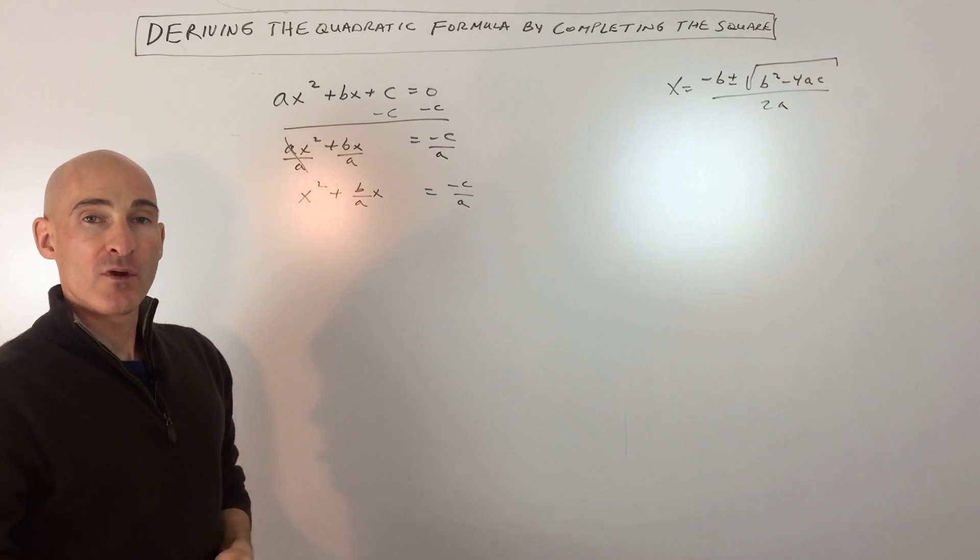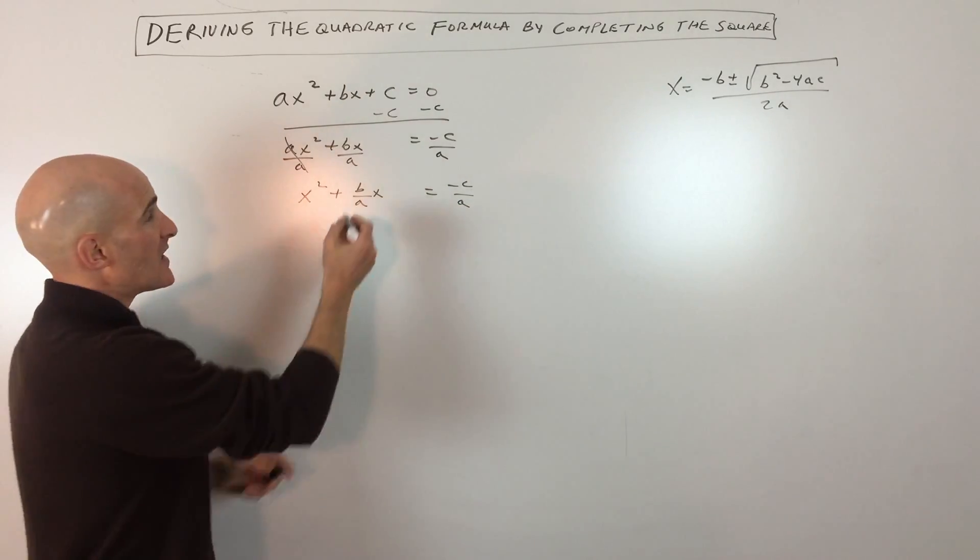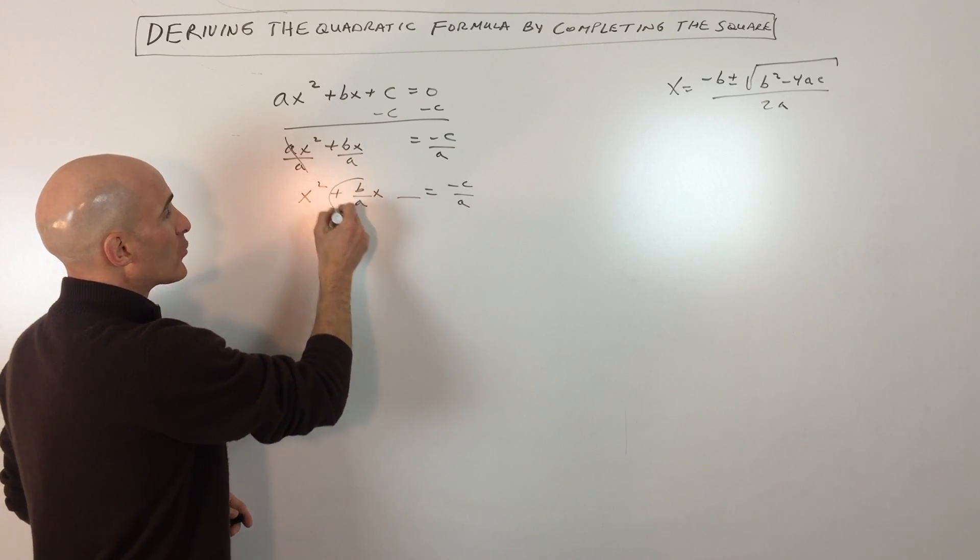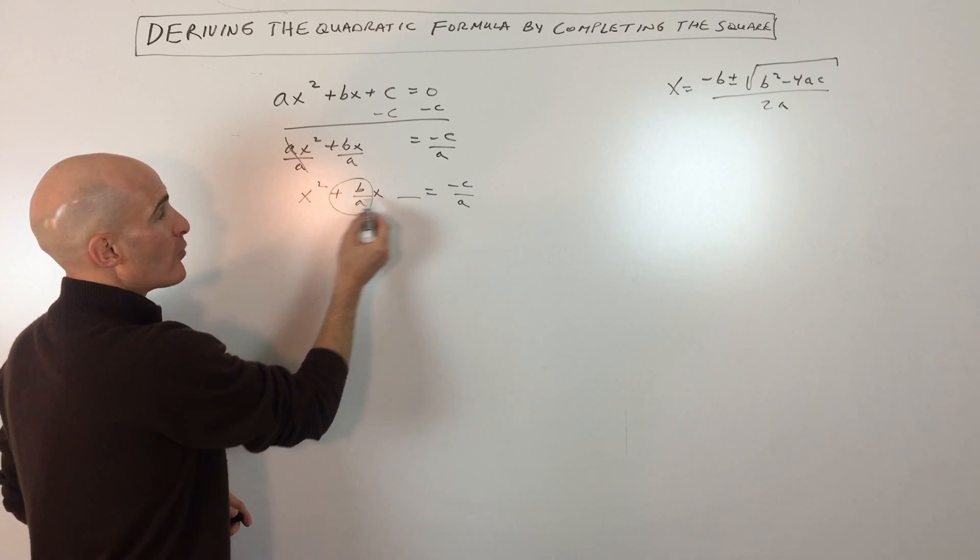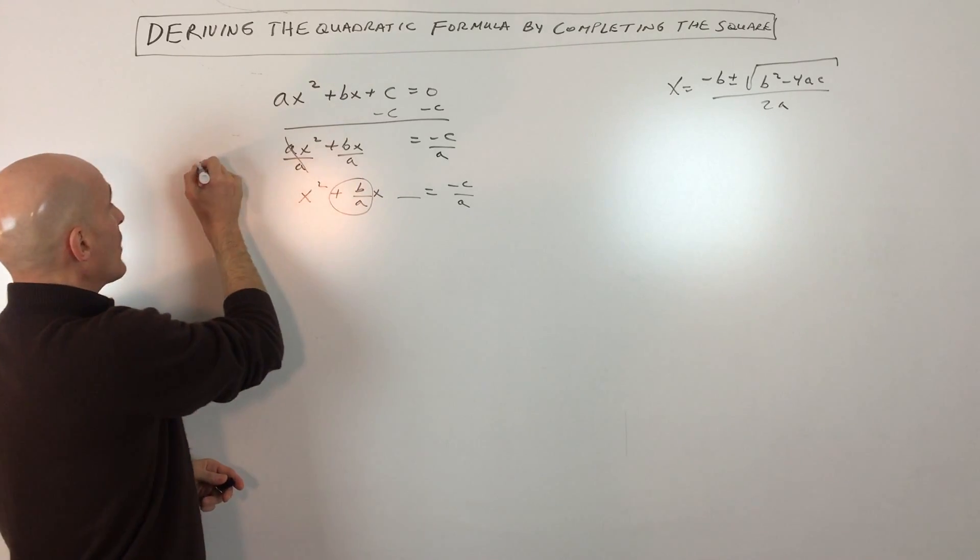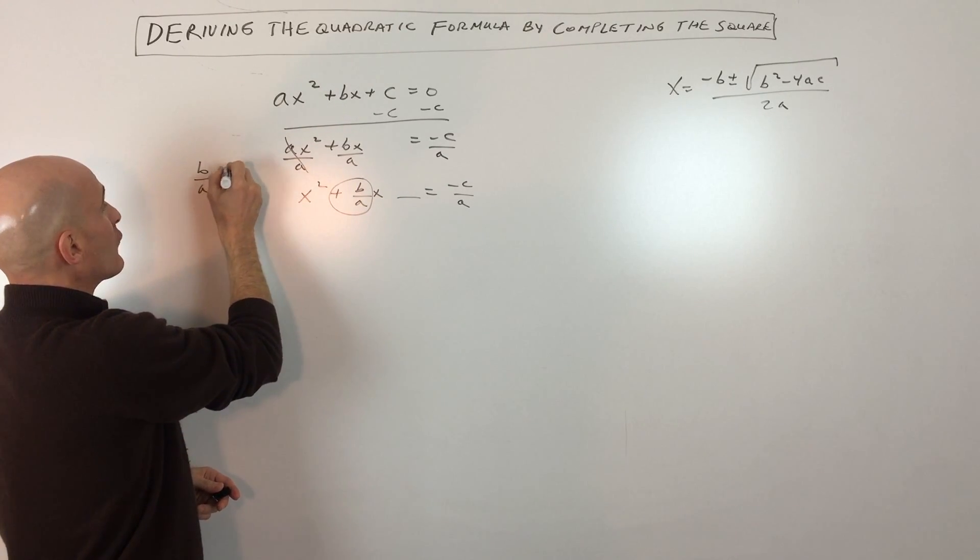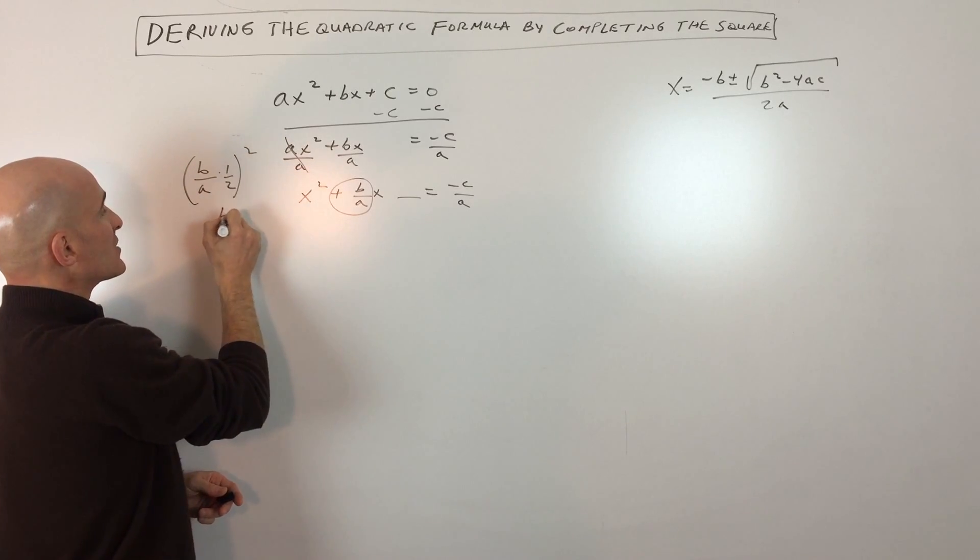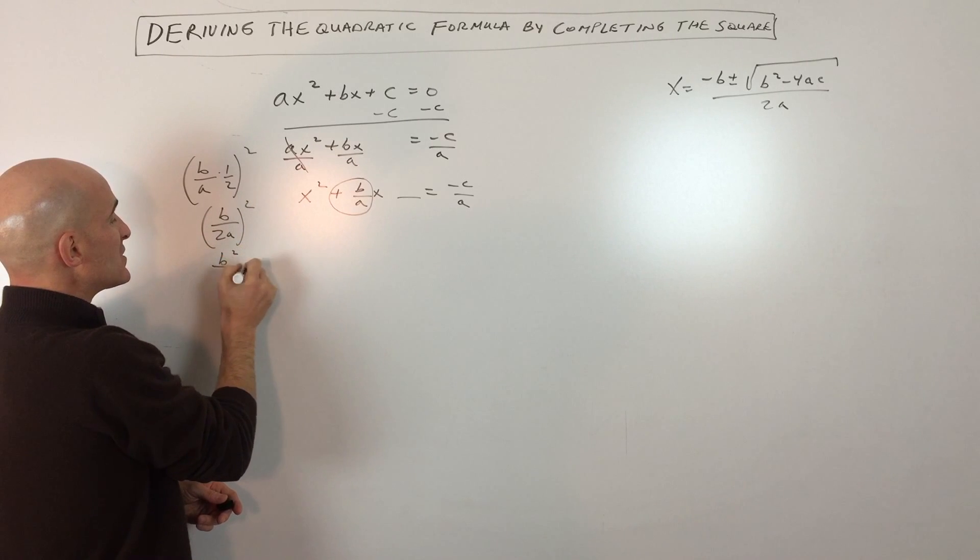Now we're going to complete the square at this point, and the way we do that is we take half of this middle coefficient. So this is going to be like a trinomial. We're going to take half of this middle coefficient, the number in front of the x, and we're going to square it. So half of b over a, that's multiplying by one half, and we're going to square that. So that's going to give us b over 2a, the quantity squared, which is b squared over 4a squared.